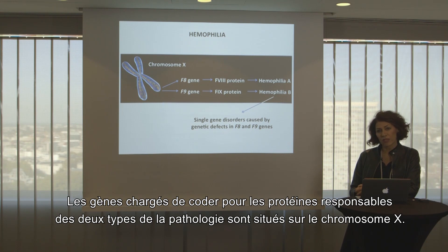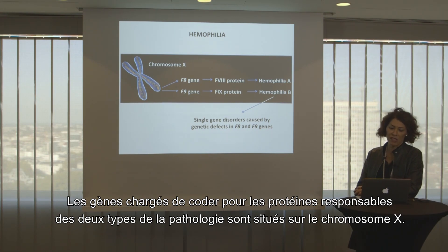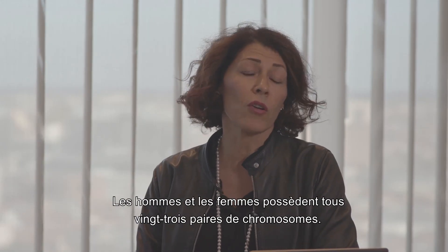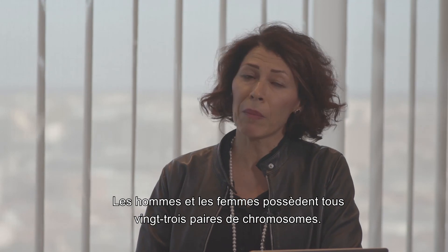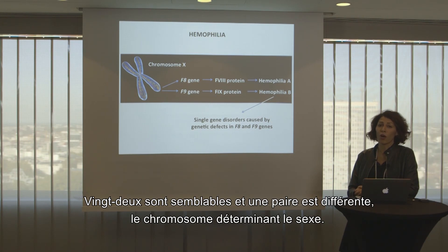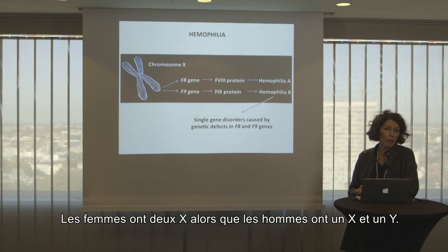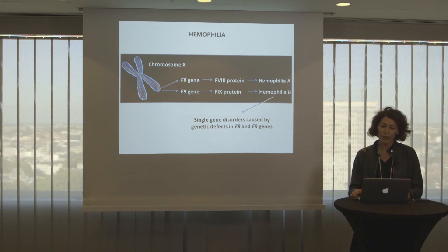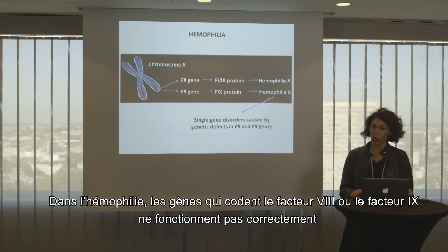The genes encoding the proteins responsible for these two types of disease are located on chromosome X. In a human body, men and women both have 23 pairs of chromosomes. Twenty-two pairs are very similar, and one pair is different — women have two X chromosomes and men have one X and one Y.